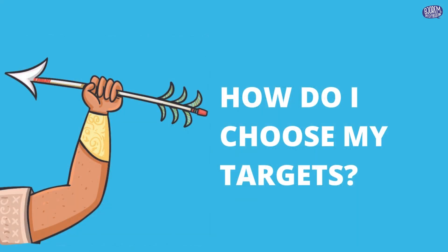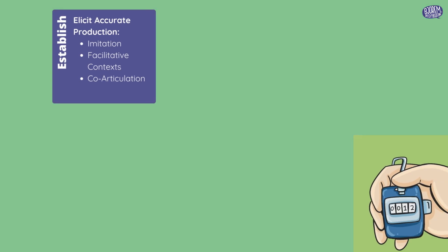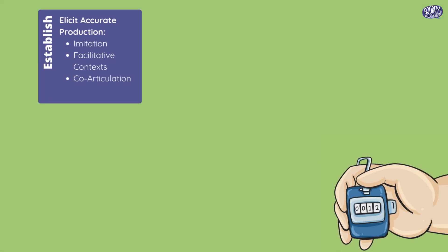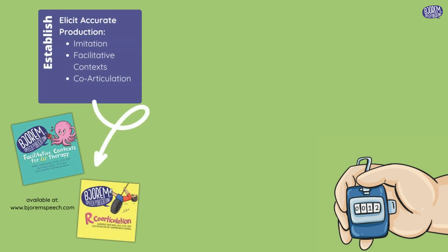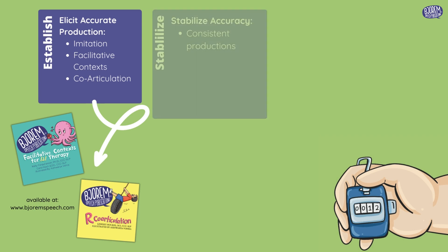But how do you choose which R to target first? When you are trying to establish an accurate R sound, you want to work on eliciting the sound through imitation, facilitative context, and co-articulation. You can use our facilitative context deck or our R co-articulation deck to achieve this. These are available at BjornSpeech.com.